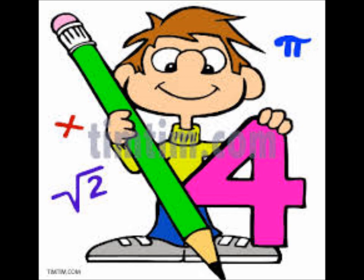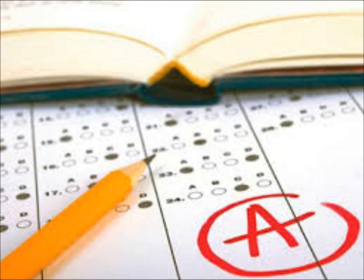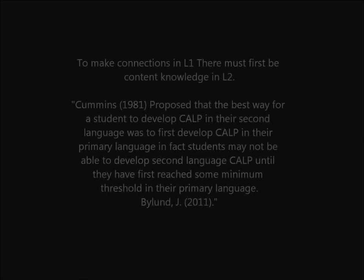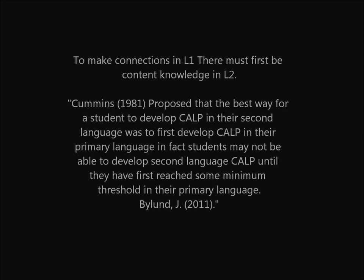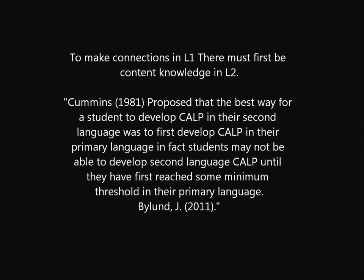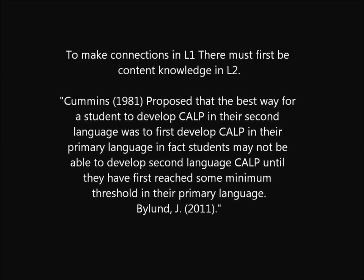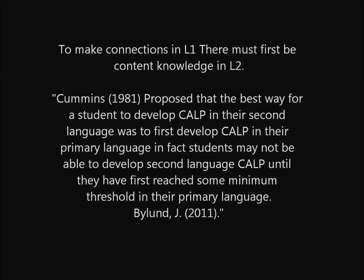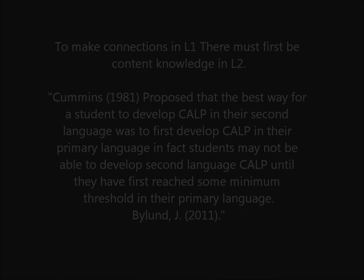Cummings proposed that the best way for a student to develop CALP in their second language was to first develop CALP in their primary language. In fact, students may not be able to develop second language CALP until they have first reached some minimum threshold in their primary language.